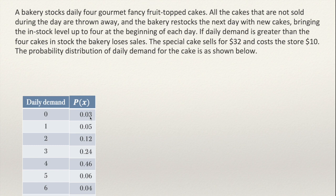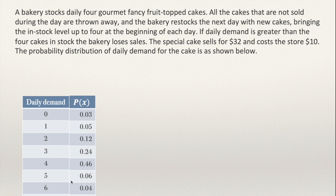There is a 0.03 probability that nobody wants the cake that day, or the demand is only one cake with a probability of 5%. There is a 46% probability for four cakes that customers are willing to buy that day. The demand for the cake has this distribution. It's possible even that five cakes are required that day; however, the store only stocks four cakes every day.